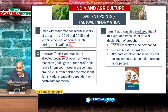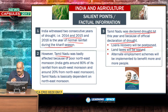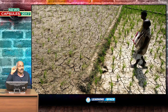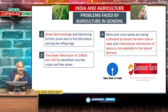Because of the official declaration of drought, the results will be that loan recovery will be postponed, land taxes will be waived, and schemes like Mahatma Gandhi NREGA will be implemented. But that is not enough. Let us look at what exactly are the problems faced by the Indian agriculture sector.